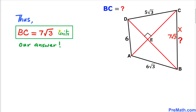Therefore x = 7√3, and our side length BC turns out to be 7√3 units. Thanks for watching — please don't forget to subscribe to the channel for more exciting videos.